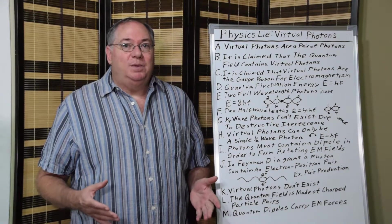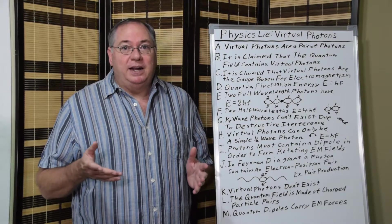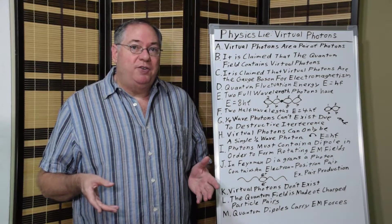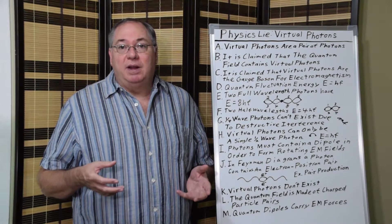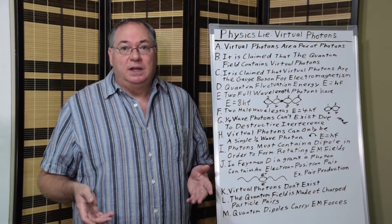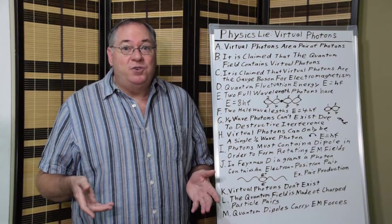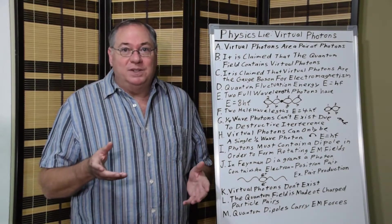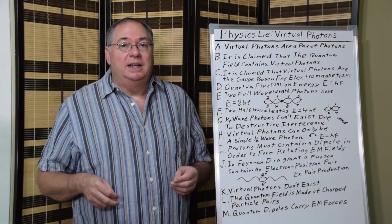And then we have a problem. Whenever you have a photon, photons produce rotating electric and magnetic fields. In order to produce a rotating electric and magnetic field, it must contain a rotating electric charge dipole. You can't get a rotating field from no charge. You can't get a rotating electric field, you can't get polarization, and you can't get magnetization without a rotating dipole.